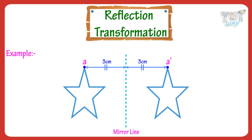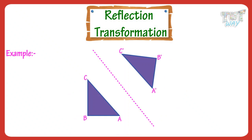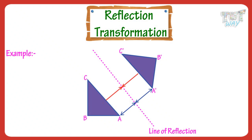Let's have a look at another example. A dash B dash C is a reflected triangle. A and A dash are equidistant from the line of reflection. B and B dash are equidistant from the line of reflection.